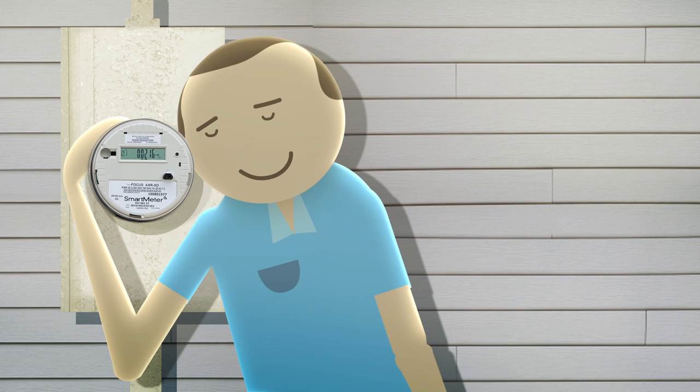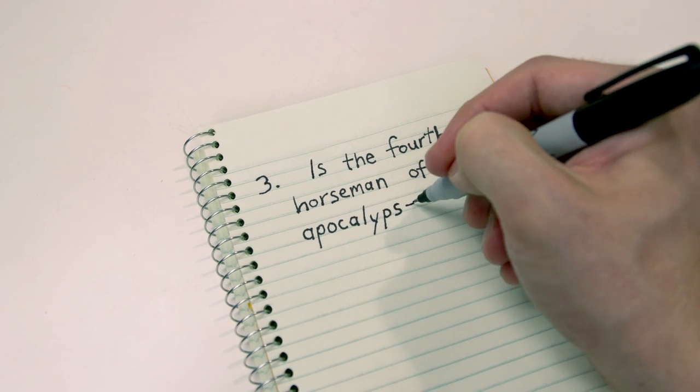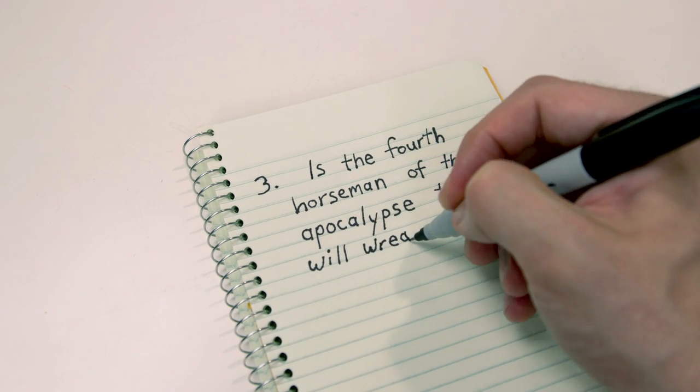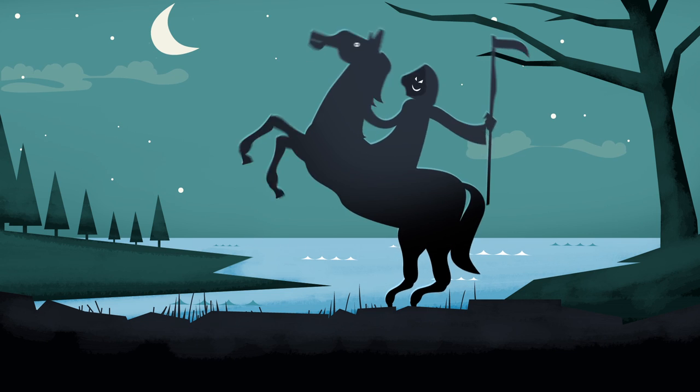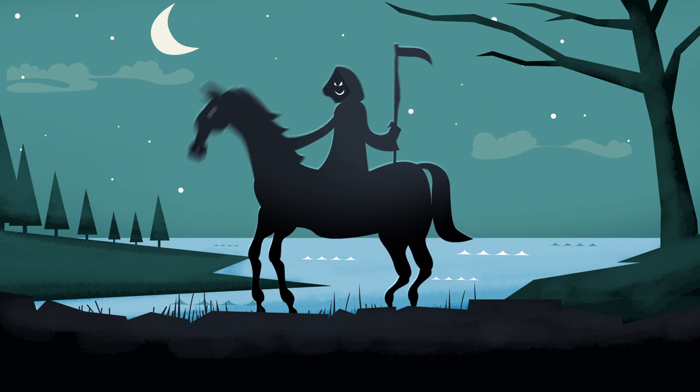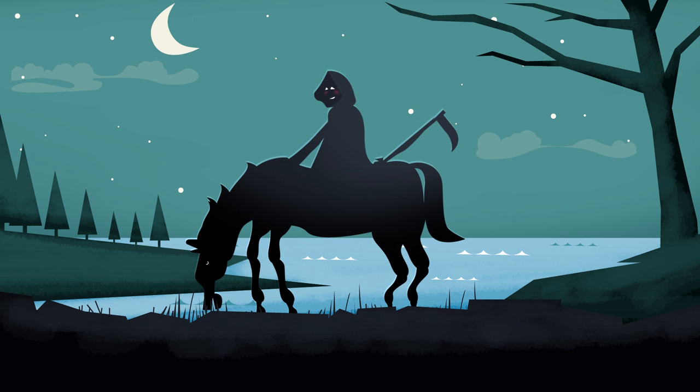Lastly, we have our final claim. A smart meter is the fourth horseman of the apocalypse that will wreak havoc on your life. Look, smart meters are not going to take over your life no matter what stories you hear on the internet.